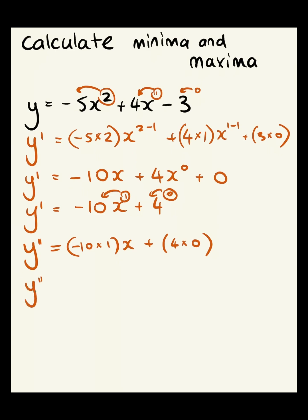Leaving us with negative 10 times 1, which is negative 10x to the power of 0 plus 0. And obviously x to the power of 0 just means times by 1, so that leaves us with negative 10. Therefore, we know that this function is a maxima because we have a negative value in our solution. As the second derivative is less than 0, that means it is a maxima.